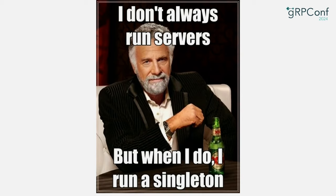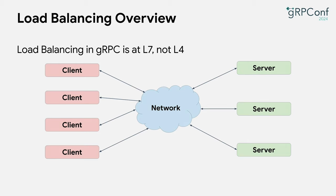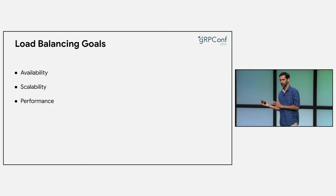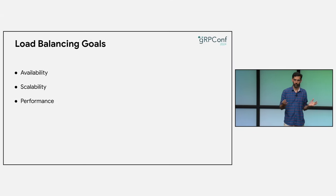If you run a single server, load balancing is not for you. But for most of the rest of us, we run multiple servers and have multiple clients sending multiple requests. This talk is going to focus on L7 load balancing, or application-level load balancing, and not L4. In gRPC, load balancing happens on a per-RPC basis and not at a per-connection level. The main goal is to ensure that client requests are distributed across server backends in a fair and appropriate manner.